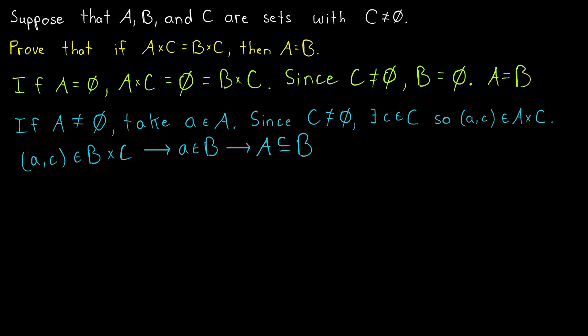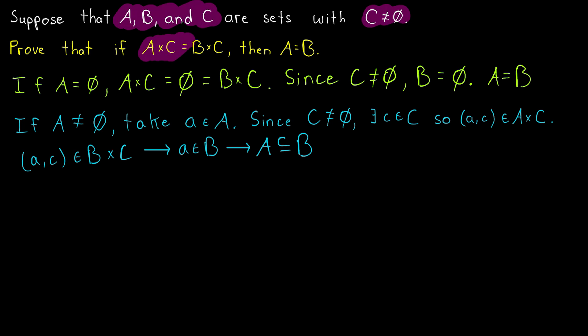And that's the proof. Showing that A is a subset of B and B is a subset of A proves that A equals B. So if we have three sets A, B, and C, where C is non-empty, and A cross C equals B cross C, then we can cancel the C's and conclude that A equals B.